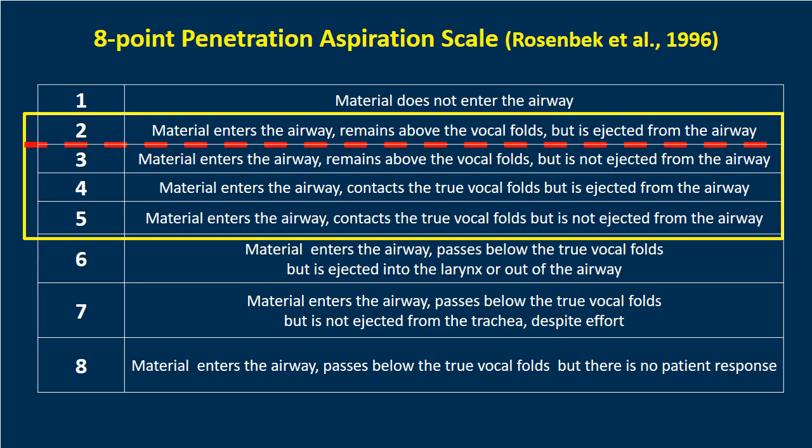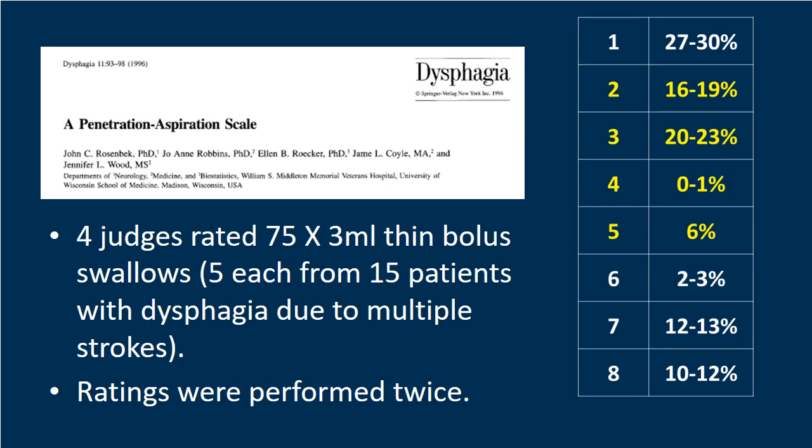Since the introduction of the Penetration-Aspiration Scale, there's been debate about whether a score of 2 should raise concern. Today it's generally accepted that a score of 2 is a transient event of little concern because it does appear to occur in healthy people. I strongly encourage you to go back to the original article published by Rosenbeck and colleagues in 1996 and read about the scale's development.